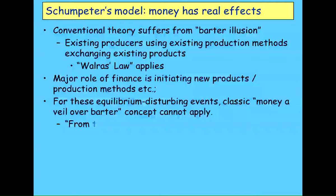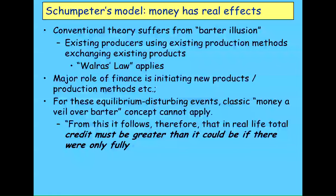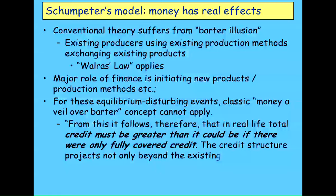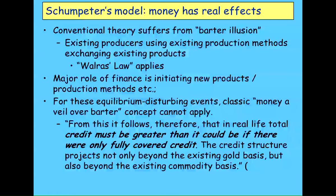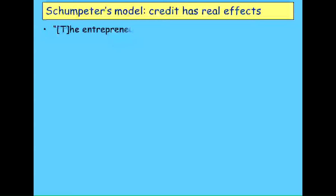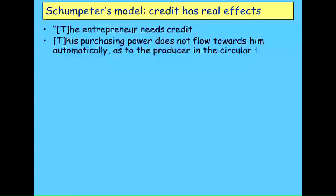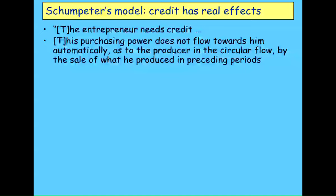That barter world would involve existing producers using existing production methods to exchange existing products — and in that world Say's Law would apply, because you've got to supply something before you can get something back, so supply creates its own demand. But the major role of finance is initiating new products and new production methods, and for those events money as a veil over barter is just nonsense. As Schumpeter says, total credit or total demand must be greater than it could be if it were only fully covered credit — demand in the economy exceeds what you can get from selling existing goods and services alone. And that world makes Say's Law false, because the additional demand comes from rising debt.